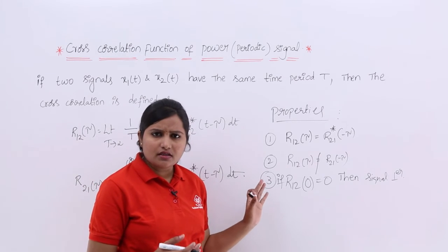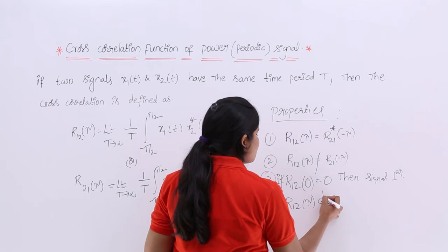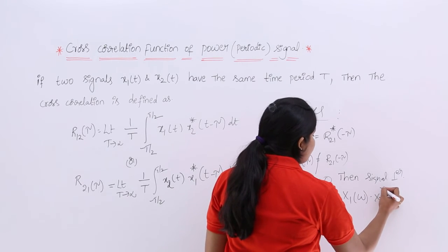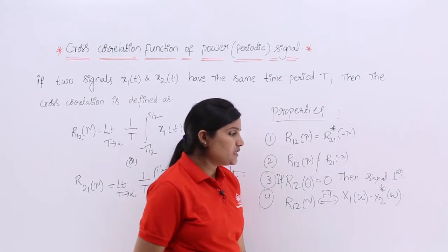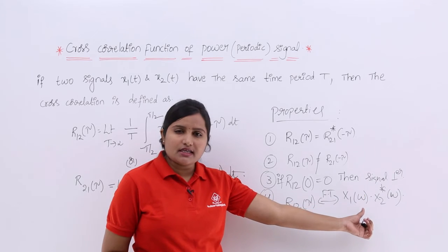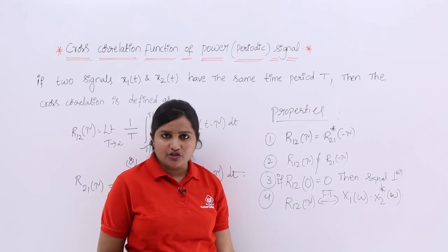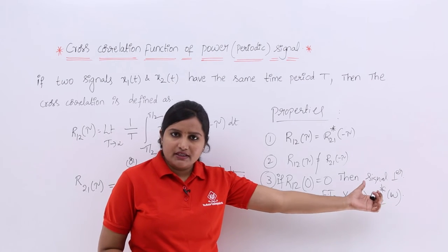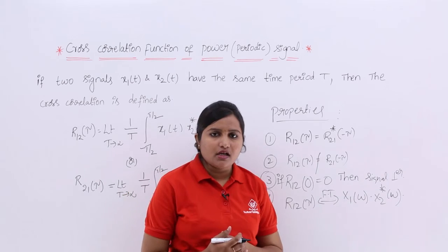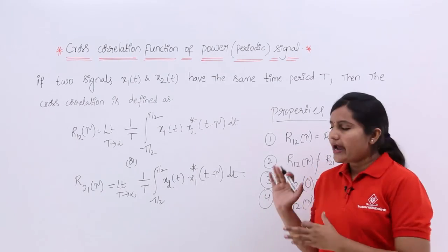Finally, we have another relation: if you take the Fourier transform of the cross correlation function of a power signal, it is equivalent to X1(ω) multiplied by X2*(ω). That means the Fourier transform of the cross correlation function equals the product of the individual transforms. If the signals are complex, you take the complex conjugate of the second signal's transform. So the multiplication of the transform of the first function with the complex conjugate of the transform of the second function equals the Fourier transform of the cross correlation function of the power signal.